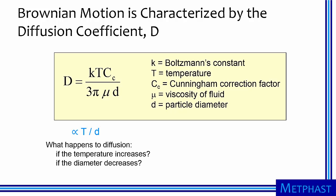Brownian motion is characterized by the diffusion coefficient, capital D. Shown in the equation in the yellow box, the diffusion coefficient is directly proportional to the fluid temperature and inversely proportional to particle diameter.